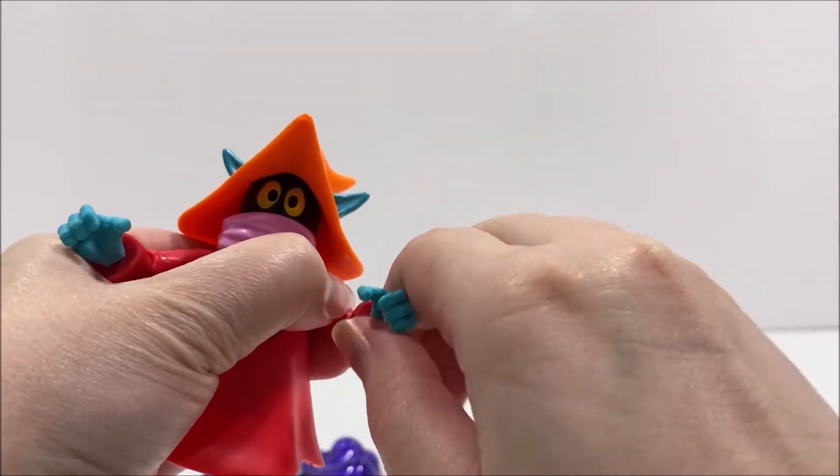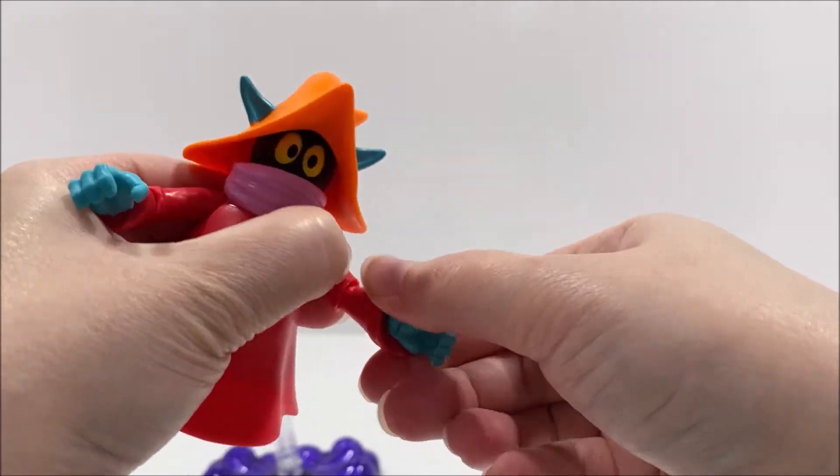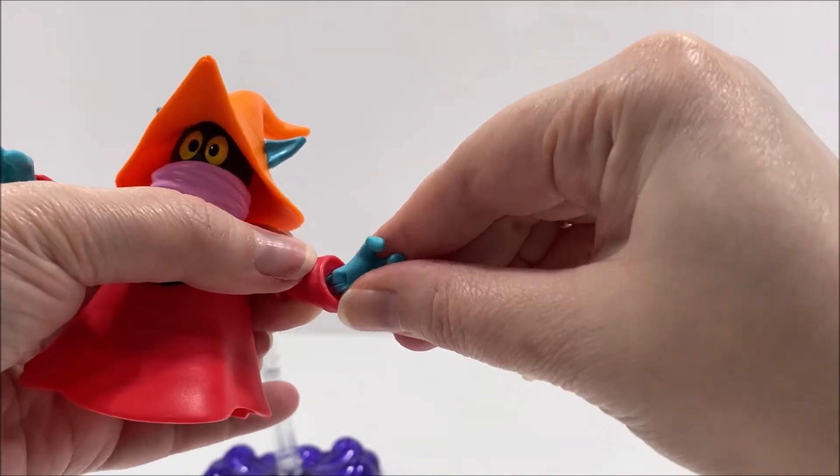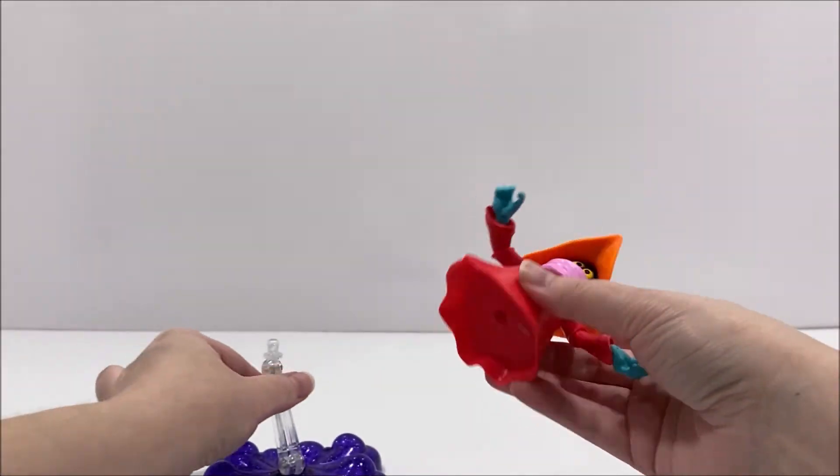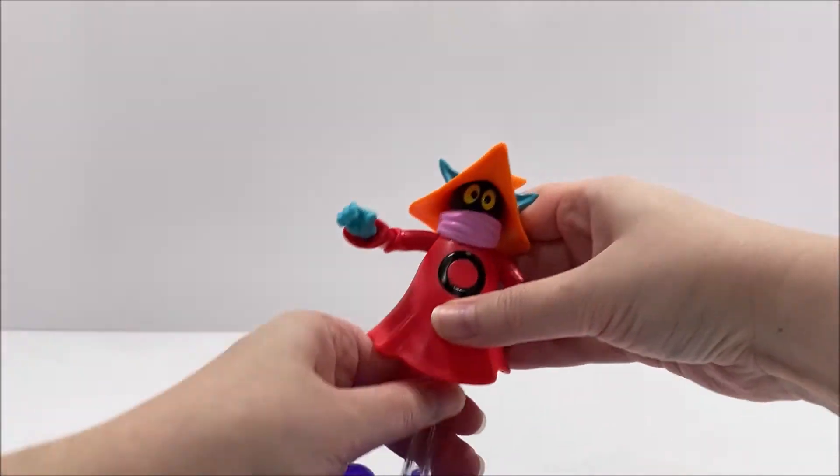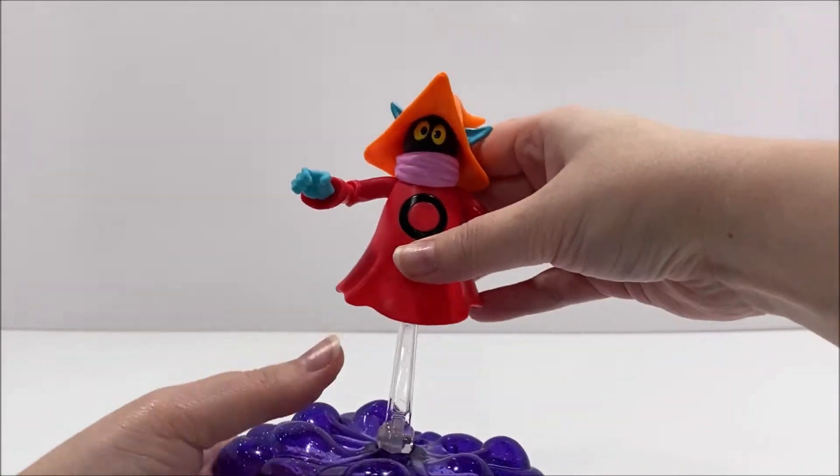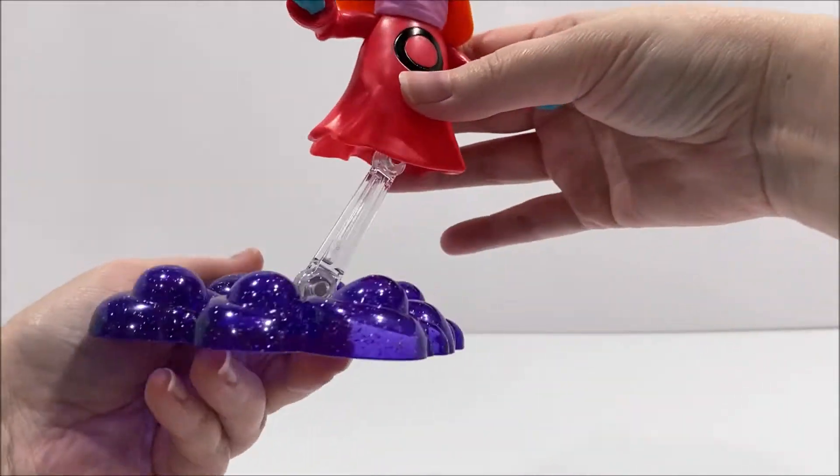Orko has different articulation than most of the other MOTU Origin figures. His head is on a ball joint above the scarf, so he can look left and right, as well as up and down. His shoulders have the same ball-like joints, so they can move forwards, backwards, and out to the side. Both Orko's elbows and his wrists can bend and rotate.